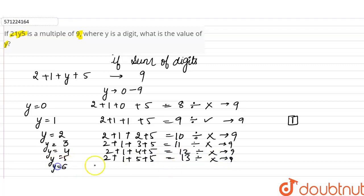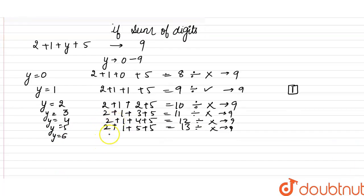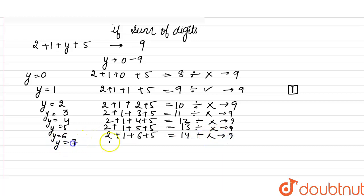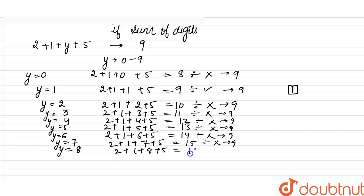When y is equal to 6: 2 plus 1 plus 6 plus 5 equals 14, and 14 is not divisible by 9. When y is equal to 7: 2 plus 1 plus 7 plus 5 equals 15, not divisible by 9. When y is equal to 8: sum equals 16, not divisible by 9. When y is equal to 9: sum equals 17, also not divisible by 9.